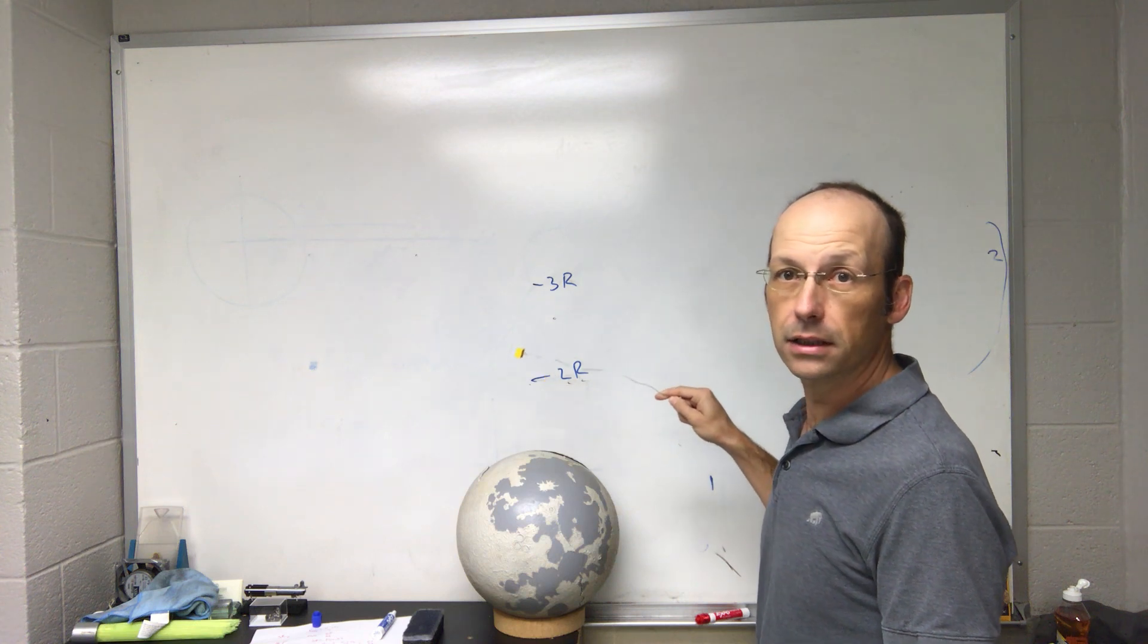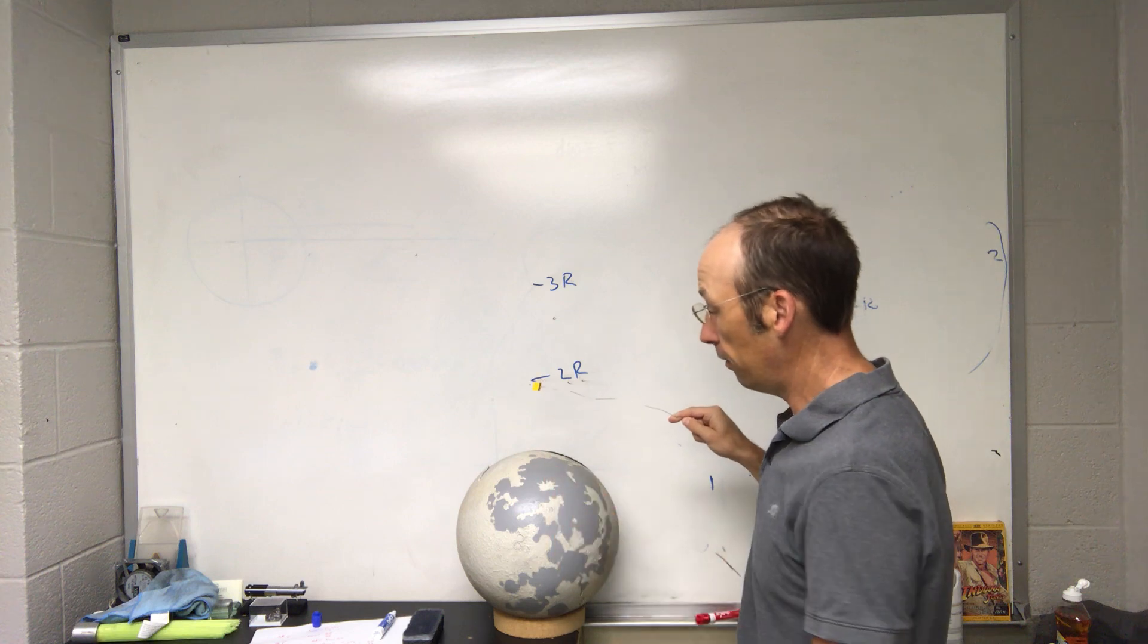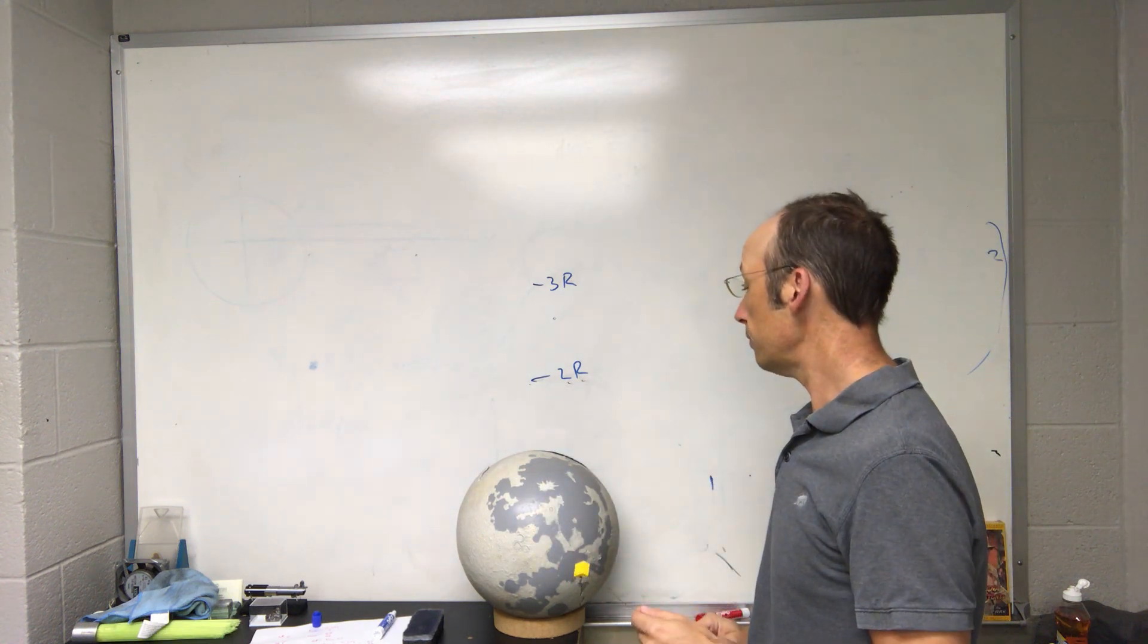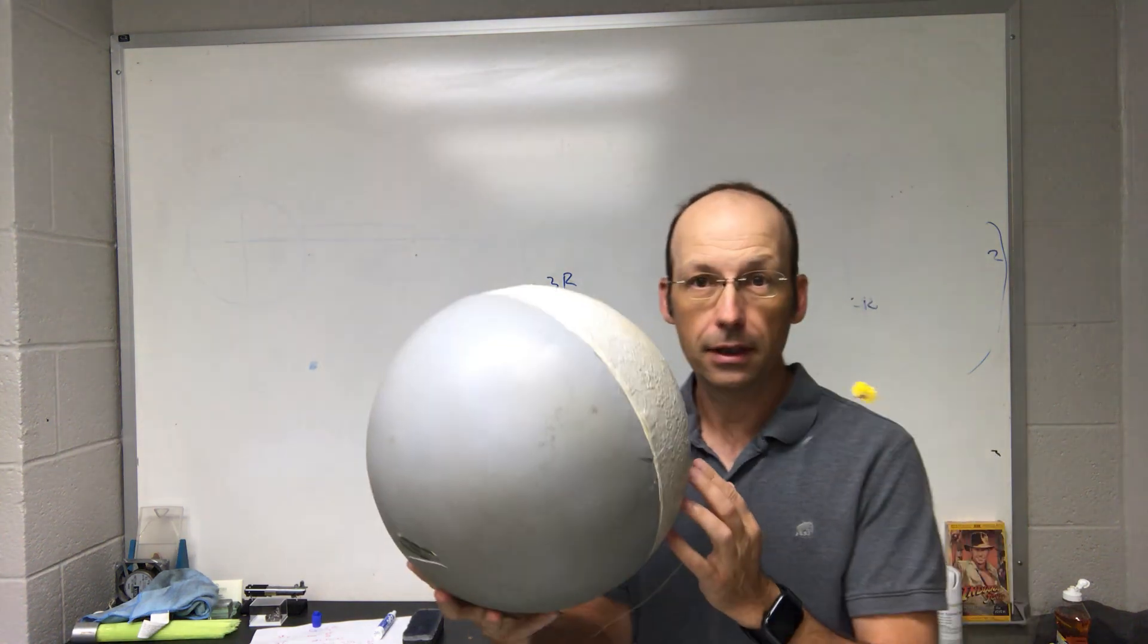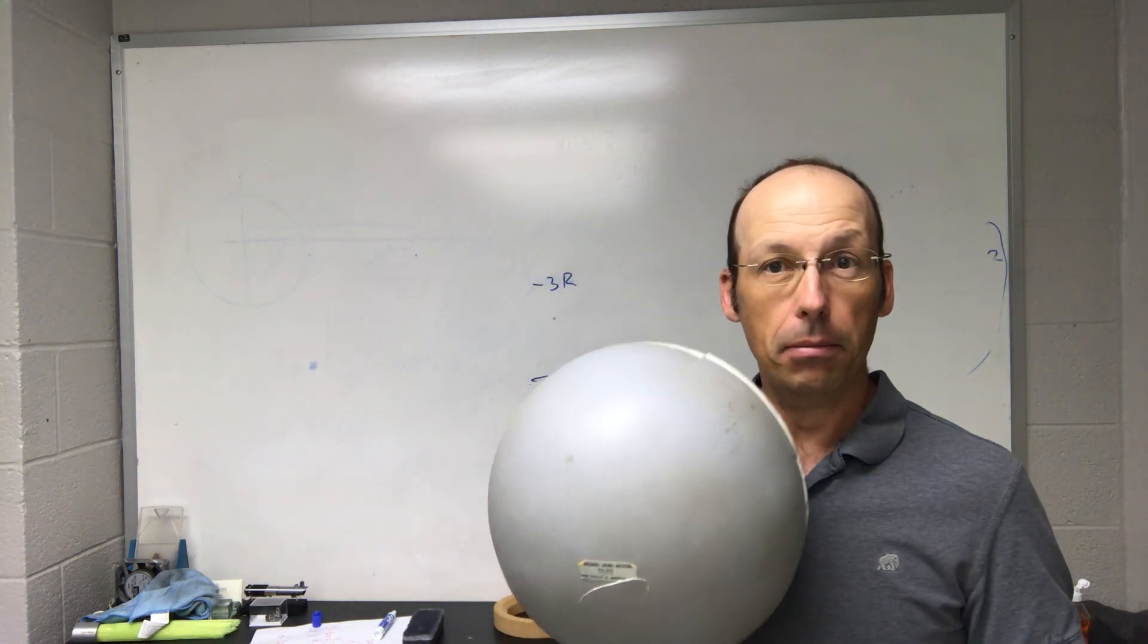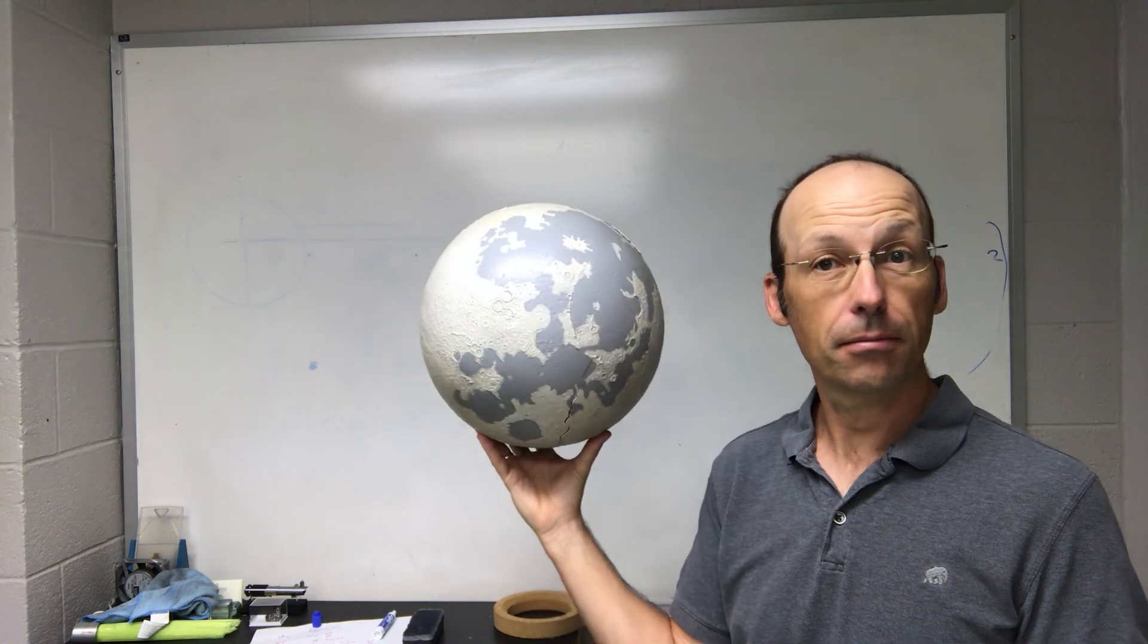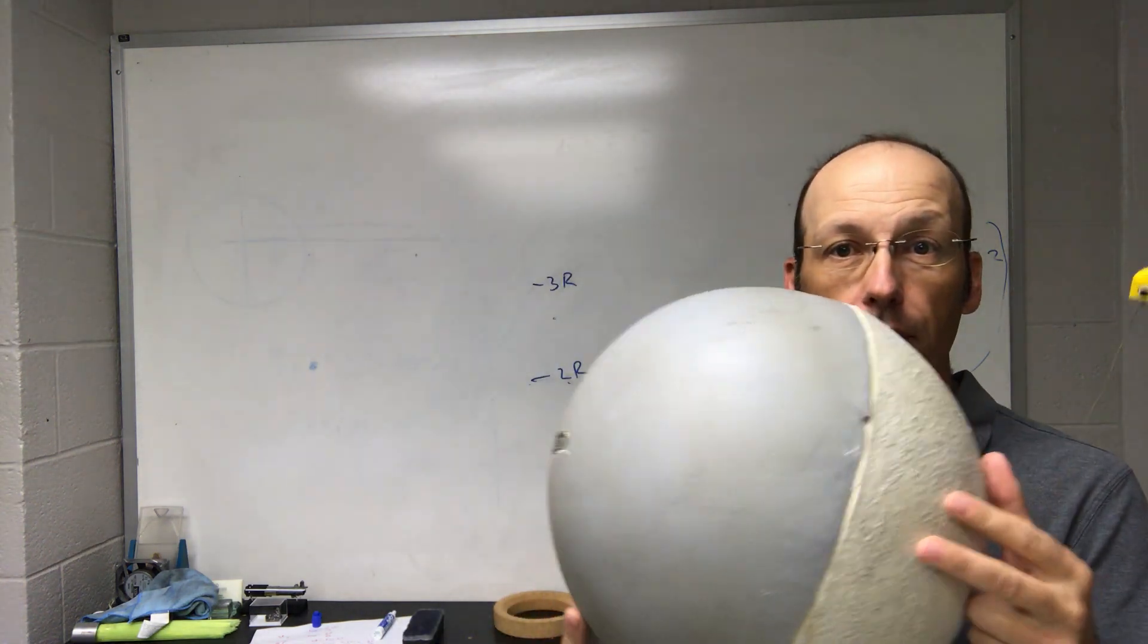The question is how fast is it going when it gets down here to two times the radius, so still above the surface of the Earth? And I should point out my ancient and broken moon model, favorite thing. The back's blank because it was made before anyone knew what was on the back side of the moon, and that's awesome and I love it. Someone dropped it a long time ago.